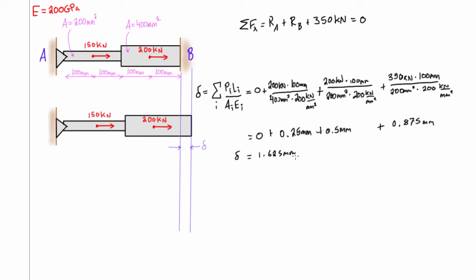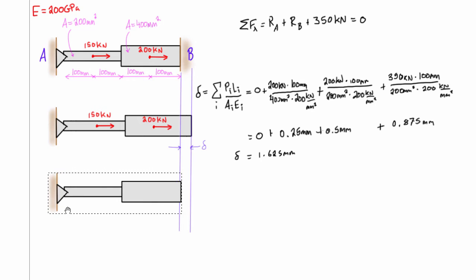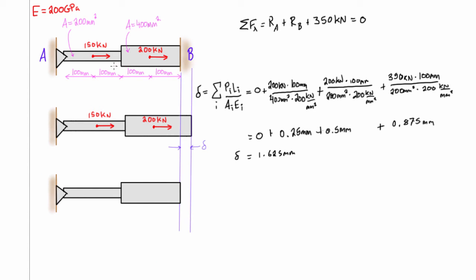That is the displacement we would get if we released the redundant support and allowed the member to fully stretch out. In real life, the wall holds it perfectly in place and just exerts a reaction force. Using the method of superposition, the original system is equal to the sum of the system with the redundant support removed plus the system where we apply the reaction force RB with that support removed.